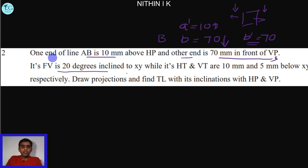The front view is 20 degrees inclined to the XY line, that is alpha equal to 20 degrees. That is the front view inclination, meaning A-dash B-dash inclination. That represents the front view, not the true length.